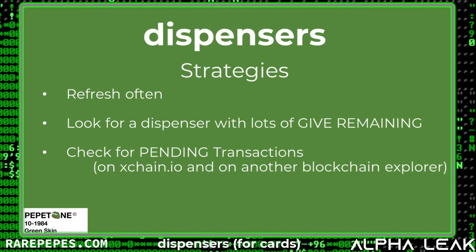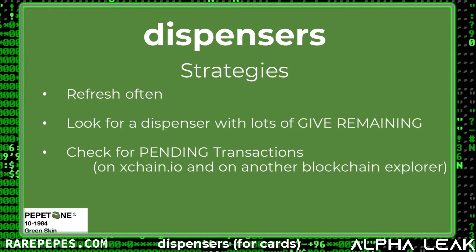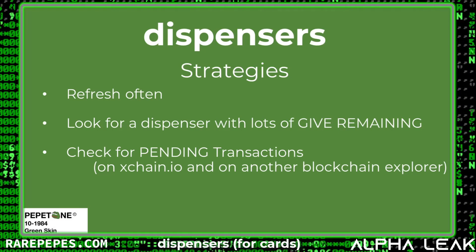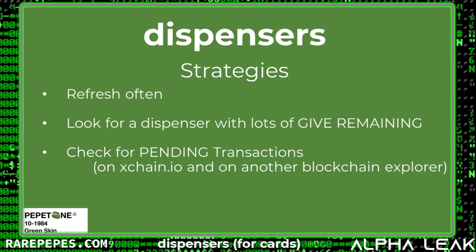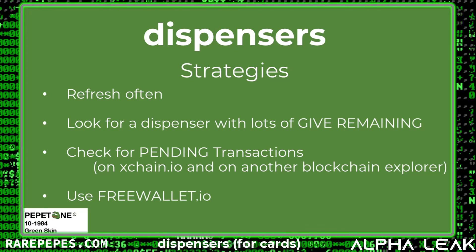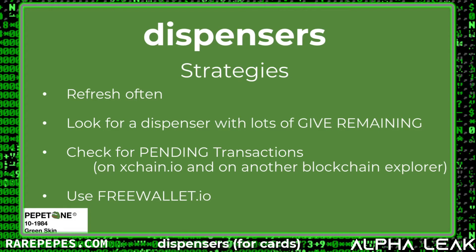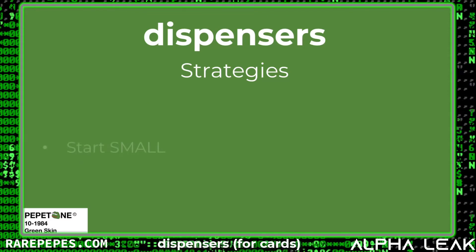Before you send to a dispenser, go to xchain.io and maybe another blockchain explorer and search that destination address to see if there are any existing pending transactions going to it. That might indicate somebody else is already trying to get that card — maybe it's better to find a different dispenser. Another strategy is to use better tools like freewallet.io, which just did an upgrade and has tools to notify you if there are pending transactions going to the dispenser you're trying to hit.